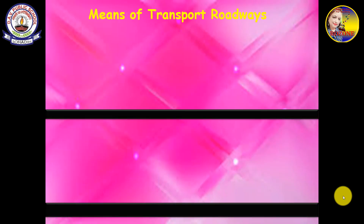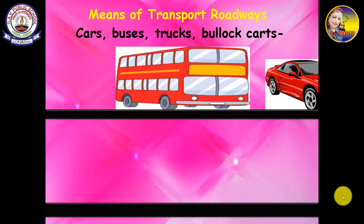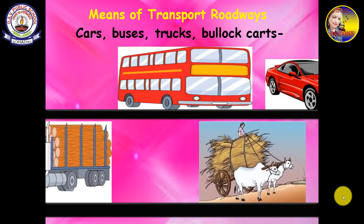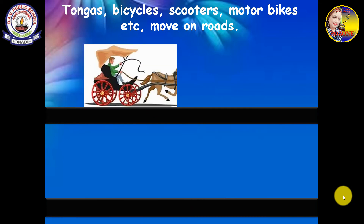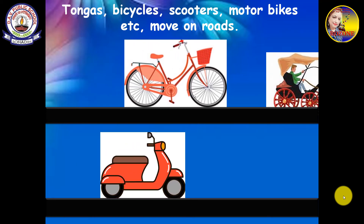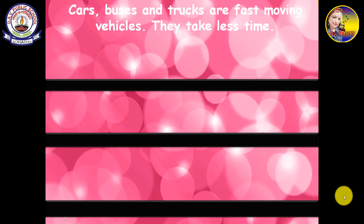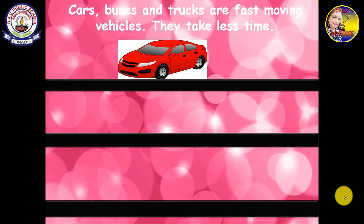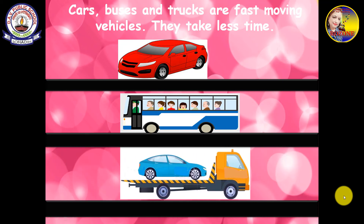Means of transport on roadways include cars, buses, trucks, bullock carts, tongas, scooters, and motorbikes — all moving on roads. Cars, buses, and trucks are fast-moving vehicles; they take less time to reach any place. If the distance is short, it can take just a few minutes to reach different places.